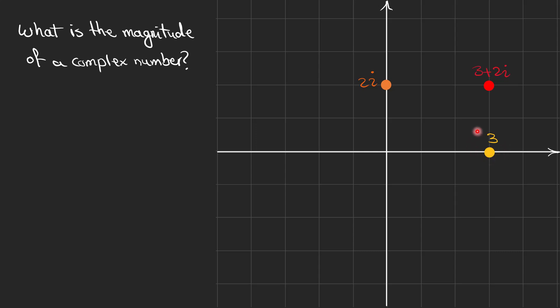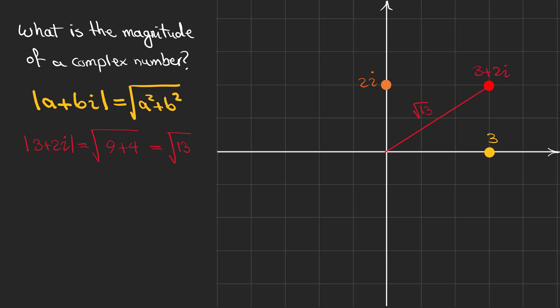As you can see, the magnitude of the number 3 is 3 units and the magnitude of 2i is 2. To calculate the magnitude of a complex number, you can use this formula: add the squares of the real and imaginary parts and take their square root. For example, the magnitude of 3 plus 2i is the square root of 9 plus 4.